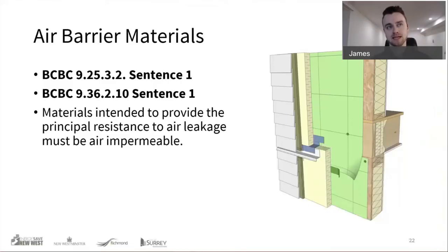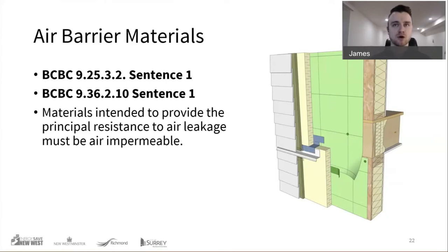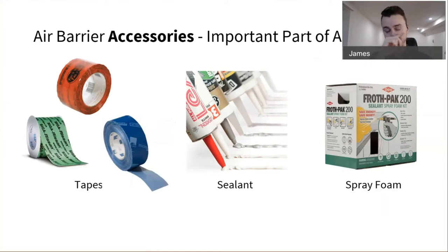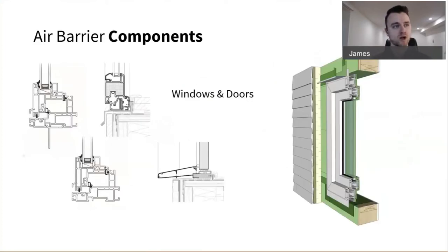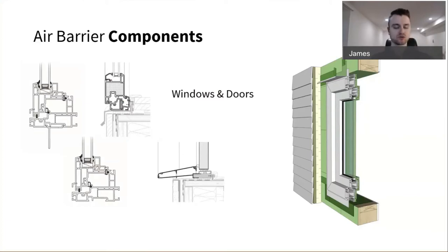BCBC 9.25 and 9.36 both have different definitions about the air barrier itself — materials intended to provide the principal resistance to air leakage. But it's not just the sheathing membrane. It's a combination of all the accessories and components: tapes, sealant and spray foam, plus the components themselves. Windows and doors going into our walls need to be correctly airtight and sealed properly at the perimeter. We're reviewing the entire enclosure from top to bottom: roofs, ceiling planes, floors as well.